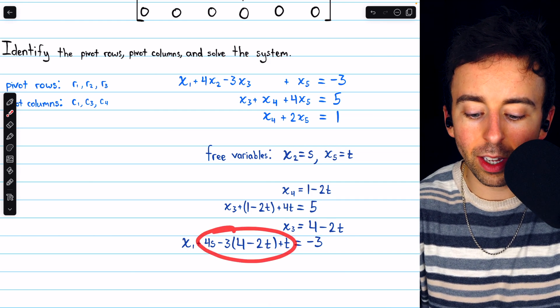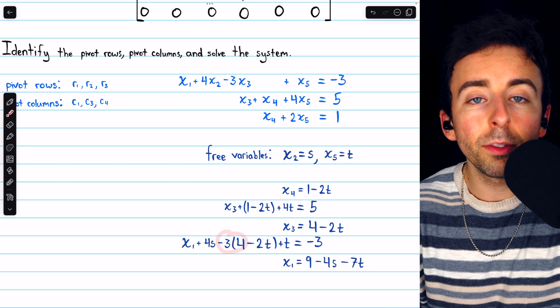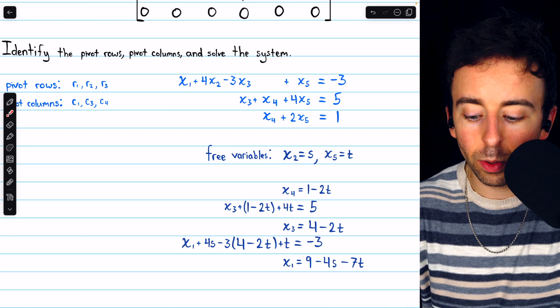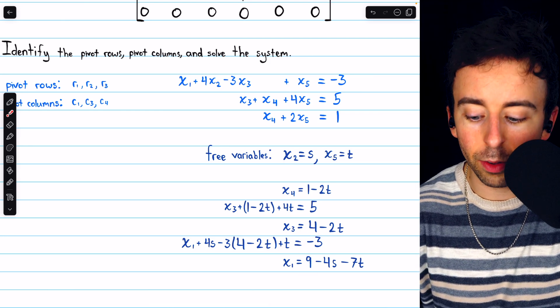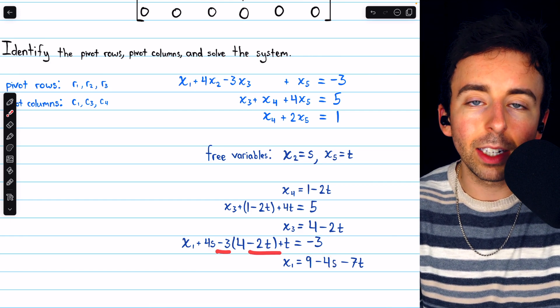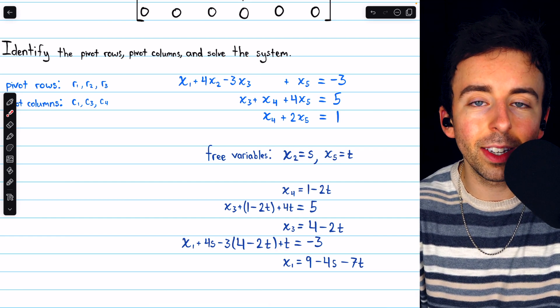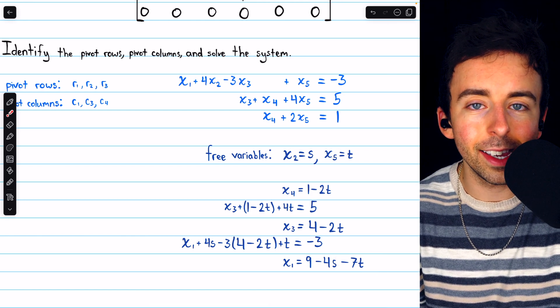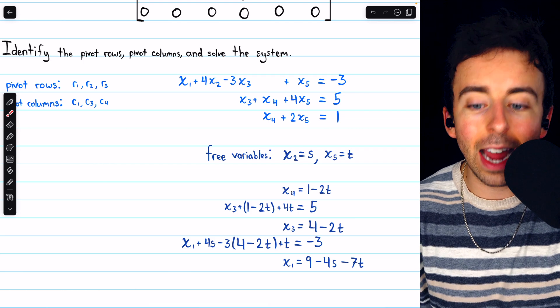Again, we're going to move everything except x1 over to the right side. Minus 3 times 4 is minus 12, and if we add that over to the other side, we have minus 3 plus 12, which is positive 9. We also have 4s, which moved to the other side, is negative 4s, and we have negative 3 times negative 2t, which is positive 6t, plus t, which is positive 7t, subtracted to the other side, is minus 7t. Hence, x1 equals 9 minus 4s minus 7t.